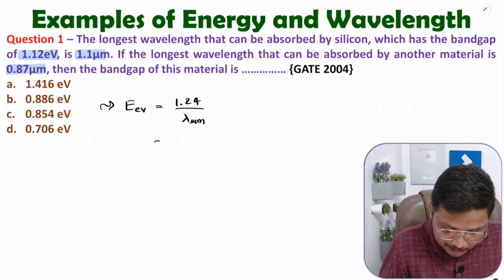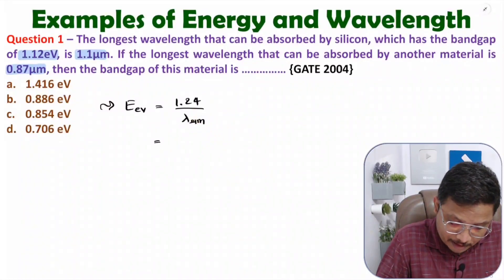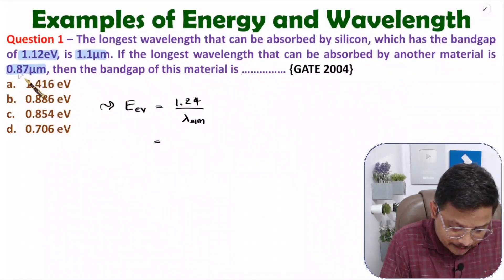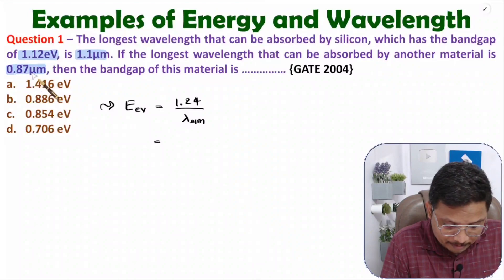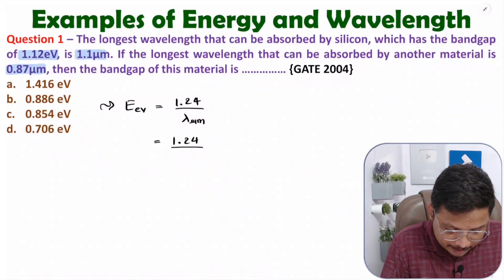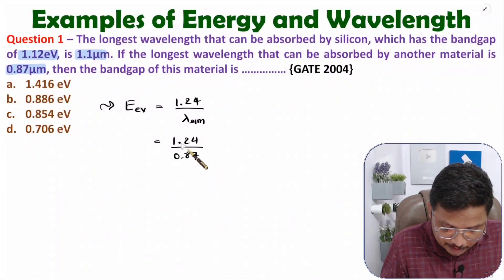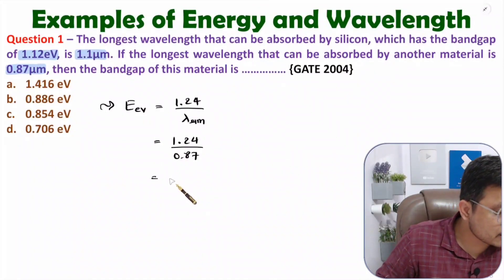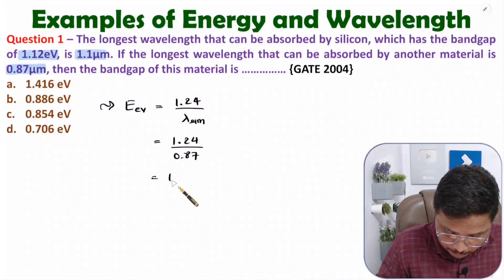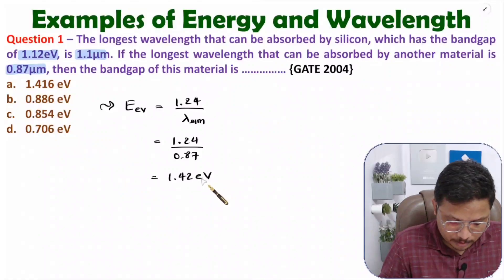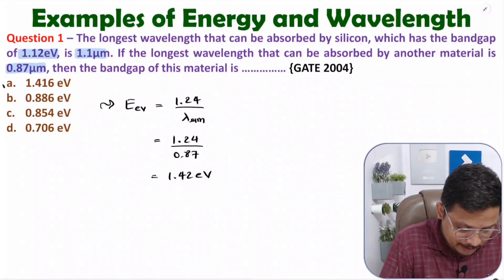If you apply the values — here we are dealing with finding the band gap of the second material whose wavelength is 0.87 micrometer — so 1.24 divided by 0.87, and if you solve this, you will have energy in terms of electron volt. Let me check my answer. My answer is 1.42 electron volt. So the approximated answer is option A.